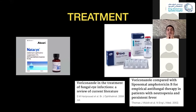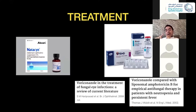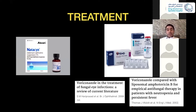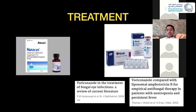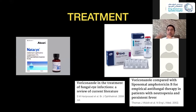Let's go back to fungal keratitis. The two main drug categories are polyenes and azoles. The polyenes bind to ergosterol and damage the cell membrane, leading to leakage of organic molecules and cell death. The azoles prevent the conversion of lanosterol to ergosterol by inhibiting the 14-alpha lanosterol methylase enzyme, which leads to cell death.